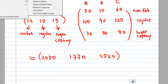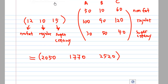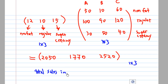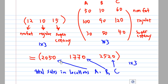This result matrix represents the total daily sales income at each location. 2050 is the total daily sales for Location A, 1770 is the total daily sales for Location B, and 2520 is the total daily sales for Location C.